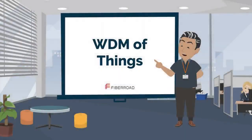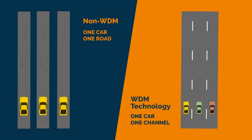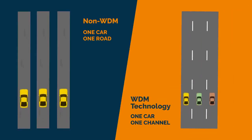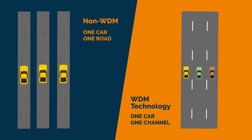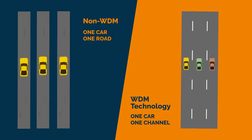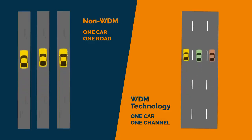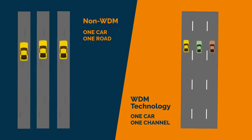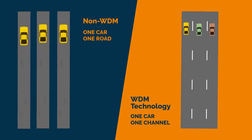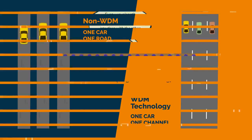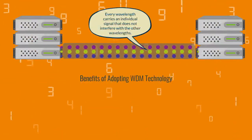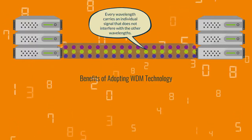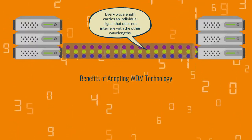WDM, or Wavelength Division Multiplexing, is a technique in fiber optic transmission for using multiple light wavelengths to send data over the same medium. We can think of it as cars on the road — every wavelength carries an individual signal that does not interfere with the other wavelengths.